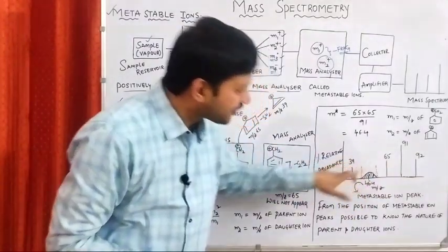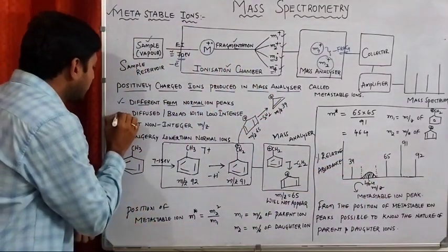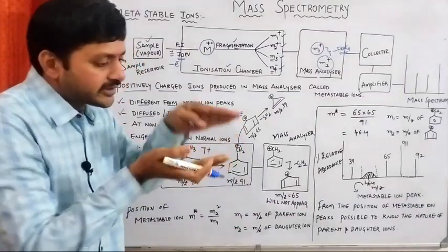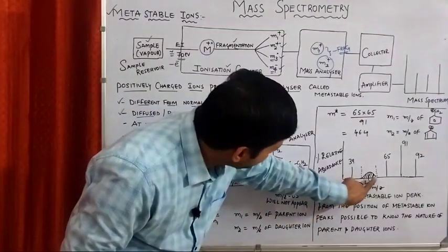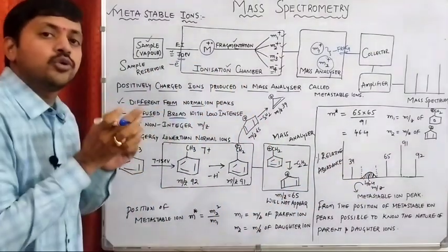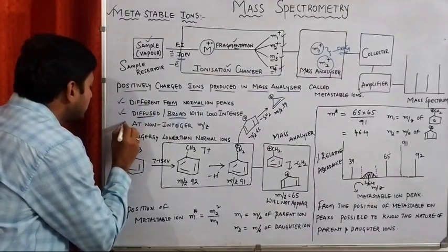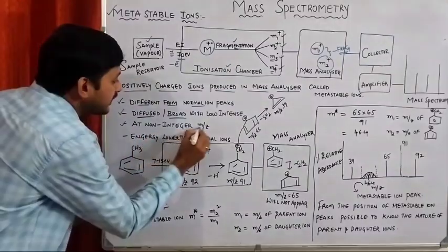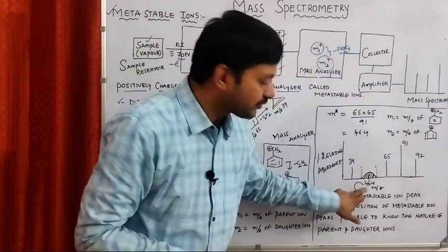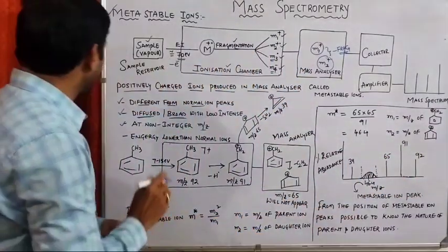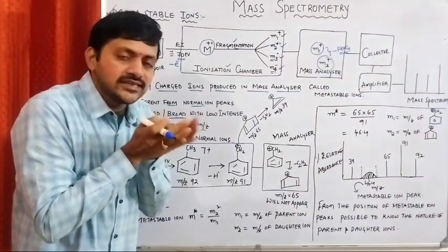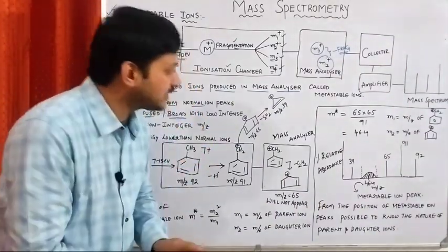Metastable ion peaks are diffuse or broad with low intensity — the peaks are broader in nature but the height is very less. These peaks appear at non-integer m/z values; normal peaks appear at integers, but metastable ion peaks appear at non-integer values. The energy of these peaks is always lower than the energy of normal ions.